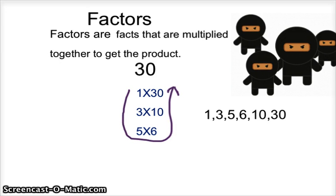Factors are facts that are multiplied together to get the product. For example, we're using 30, and 1 times 30 equals 30, 3 times 10 equals 30, 5 times 6 equals 30.